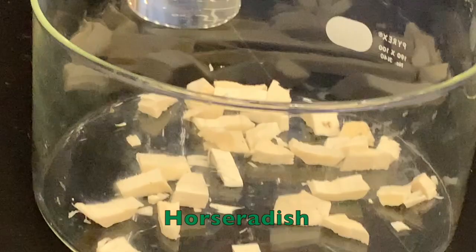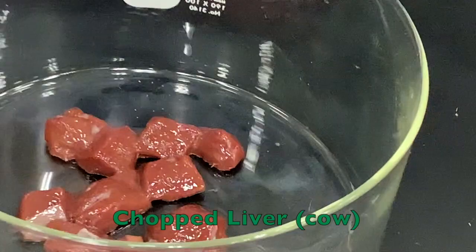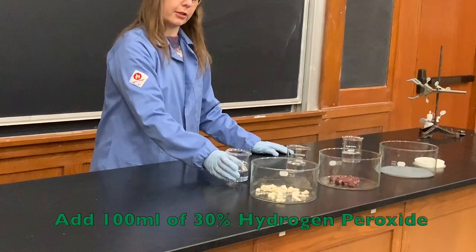This first dish contains horseradish, the second dish contains chopped liver, and finally we have manganese dioxide. I'm going to pour 100 milliliters of 30% hydrogen peroxide in each dish so we can observe the catalytic decomposition.